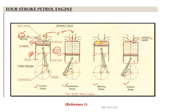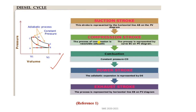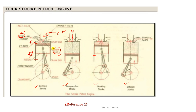In summary, we have explained the working of the four-stroke petrol engine and the four-stroke diesel engine. Remember: whenever there is a spark plug, it is a petrol engine; whenever there is a fuel injector, it is a diesel engine. In petrol engines, air plus petrol is inducted through the intake valve; in diesel engines, only air is inducted and diesel is injected through the fuel injector. Thank you very much, and we will meet again in the next video.